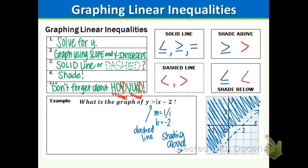Any point that is in the shaded area is a solution. However, the points on the dashed line are not solutions — that's what dashed means: we're not including those points. It also makes sense that there's no line underneath the greater than symbol.